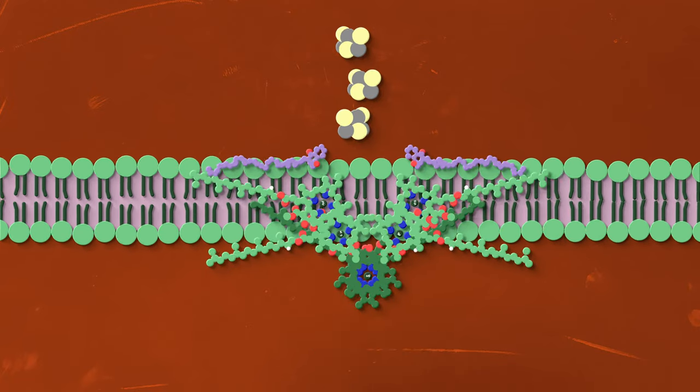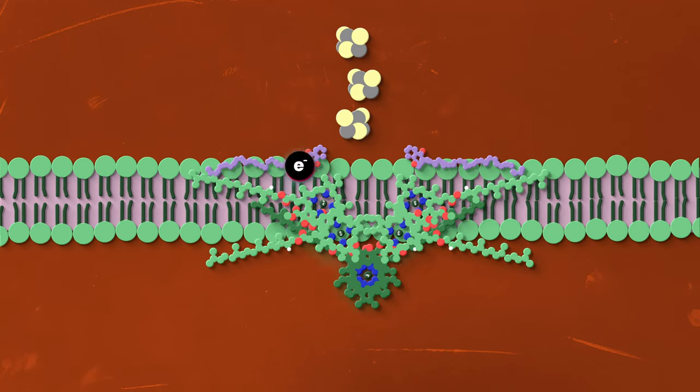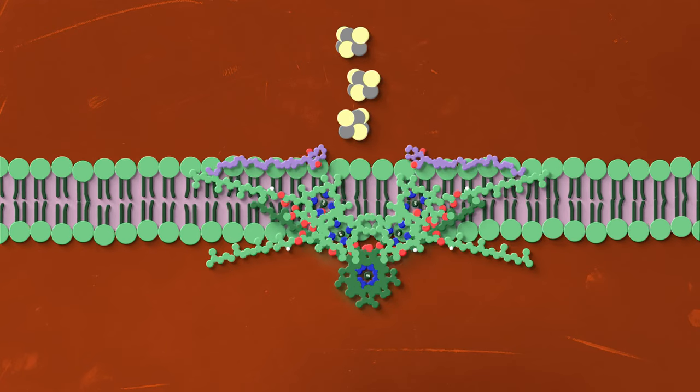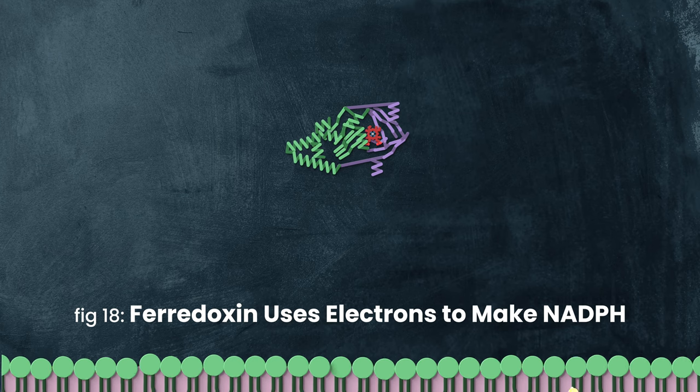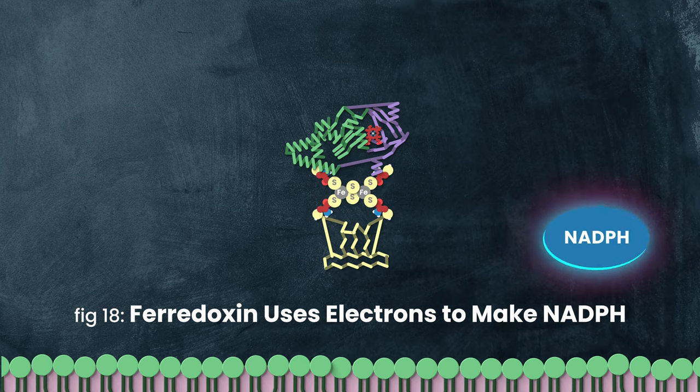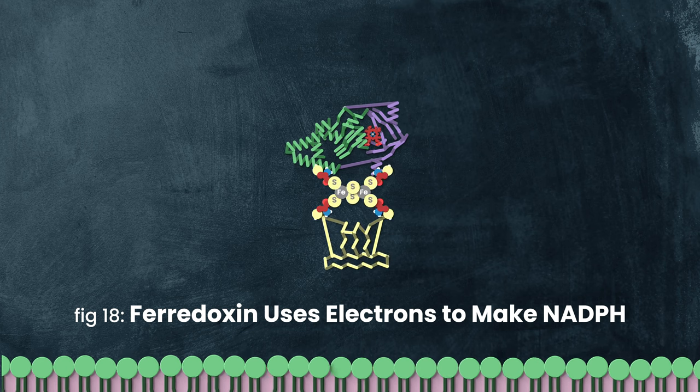But back up to the final steps. Where does ferredoxin go, and what is the ultimate fate of our electron travelers? And finally, we're getting to the end of this journey here, with our last carrier, ferredoxin. Ferredoxin carries this electron to its final destination in the stroma. All FD is going to bind to this enzyme, where the electrons can get bound to a familiar energy molecule, NADPH.